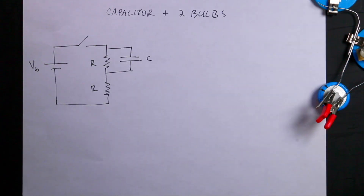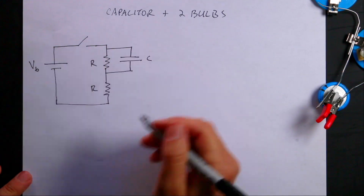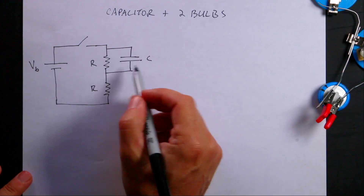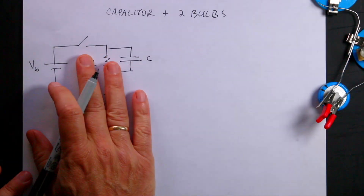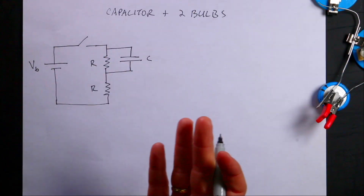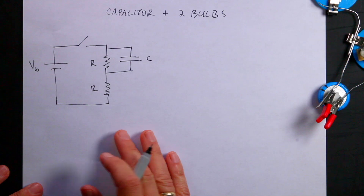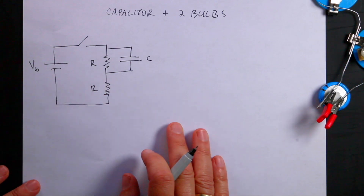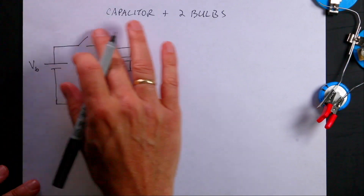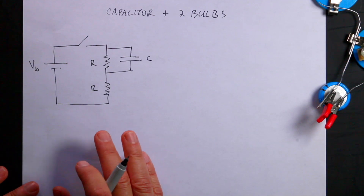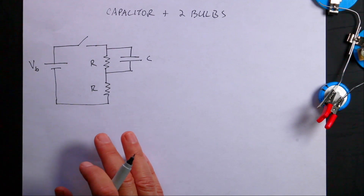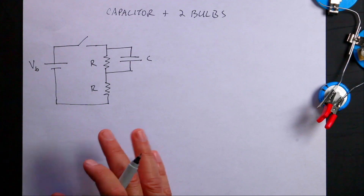The capacitor starts off uncharged. In this circuit, as in any circuit, we have two things that have to be true. The loop rule has to be true — the sum of the voltages around any loop has to add up to zero. And the current has to be conserved, so the current coming into a junction has to equal the current coming out.